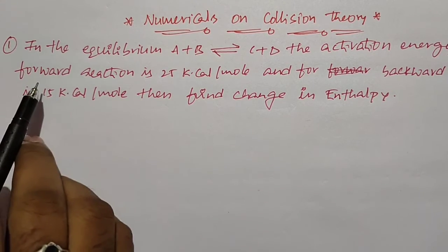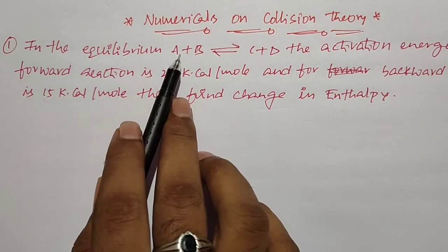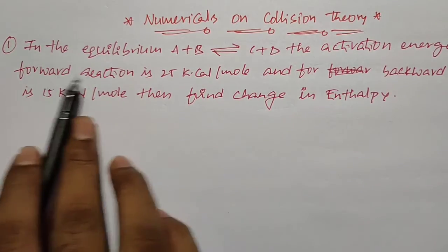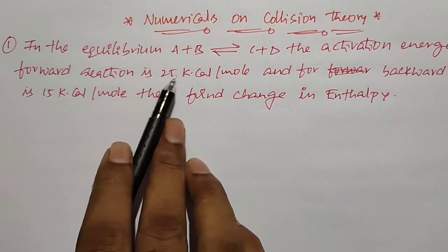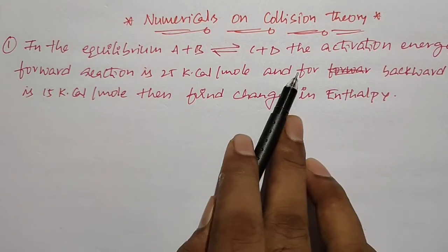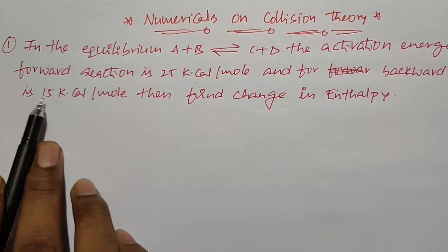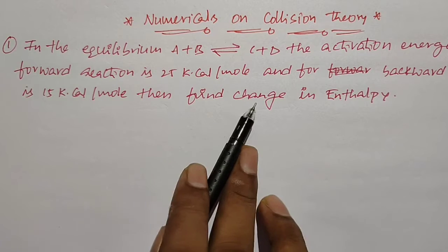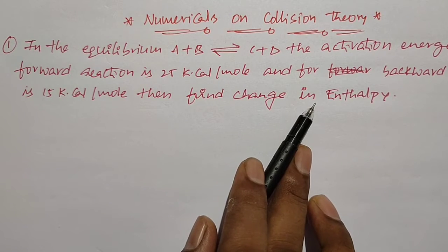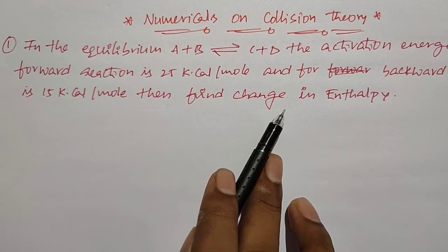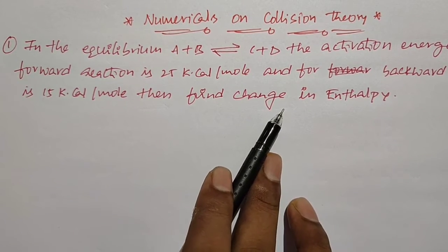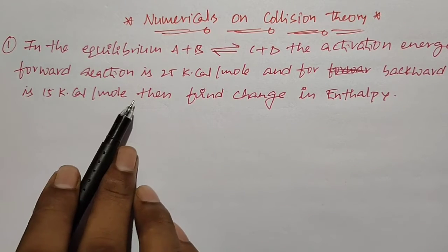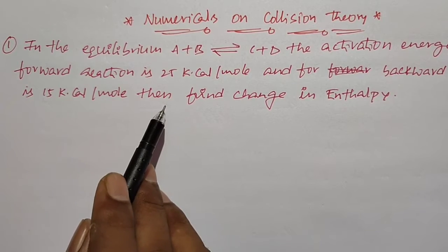This is the first question. If the equilibrium A + B gives rise to C + D, the activation energy for the forward reaction is 25 kilocalories per mole and for the backward reaction is 15 kilocalories per mole. They are asking about the ΔH value, and they give the activation energy for the forward reaction and the activation energy for the backward reaction.